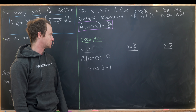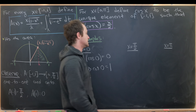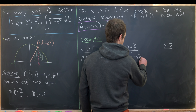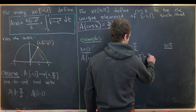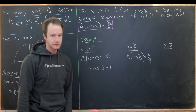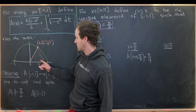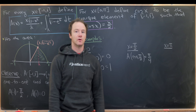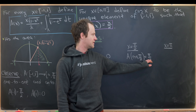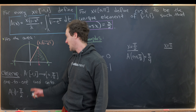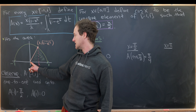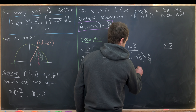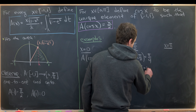Now let's look at the case when x equals pi over two. We should have A evaluated at cosine of pi over two equal to pi over four. We want a value of x such that the sector area equals pi over four — that's just the area of a quarter circle, which occurs when x equals zero. So cosine of pi over two equals zero.